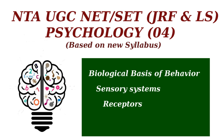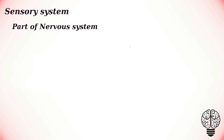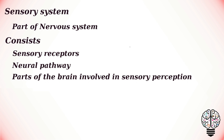Hey everyone, in the following videos we are going to talk about biological basis of behavior. In this video we are going to talk about sensory systems and receptors. A sensory system is a part of the nervous system which is responsible for processing sensory information. It consists of sensory receptors, neural pathways, and parts of the brain involved in sensory perception.